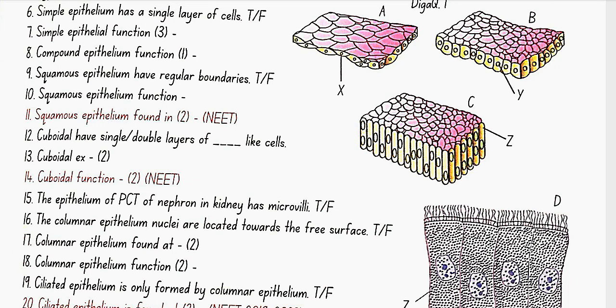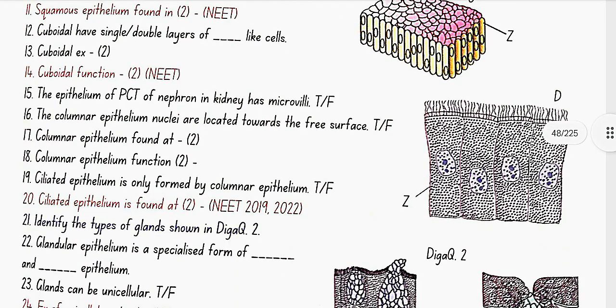Cuboidal have single layer of cube-like cells. Cuboidal examples: ducts of glands and tubular parts of nephrons. Cuboidal function: secretion and absorption.